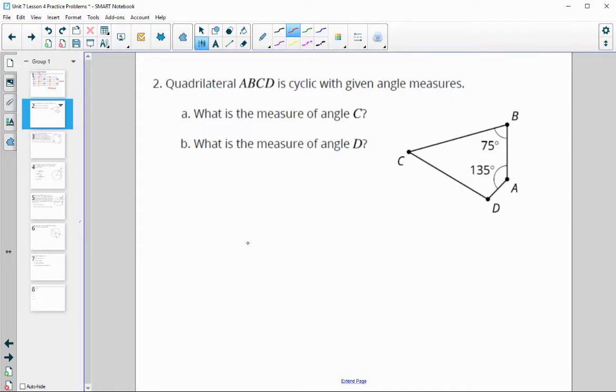Number two says quadrilateral ABCD is cyclic with the given angle measures. So again, cyclic means that the opposite angles will total 180.